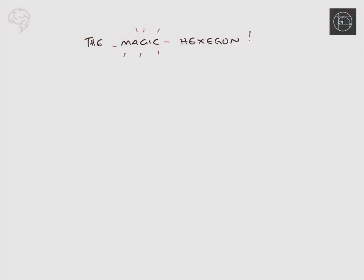Students tell me all the time that they love the magic hexagon, so I thought I would show you. It's basically a way of remembering the Pythagorean identities for trigonometry in A-level maths. So what do we have? Tan is sine over cos.